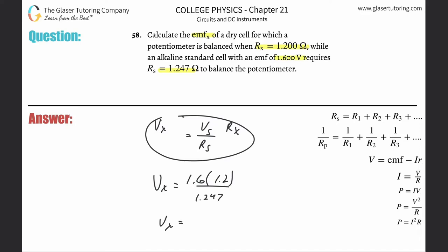And all we got to do is just plug it in. So 1.6 times 1.2 divided by 1.247 gives us 1.54 or so.